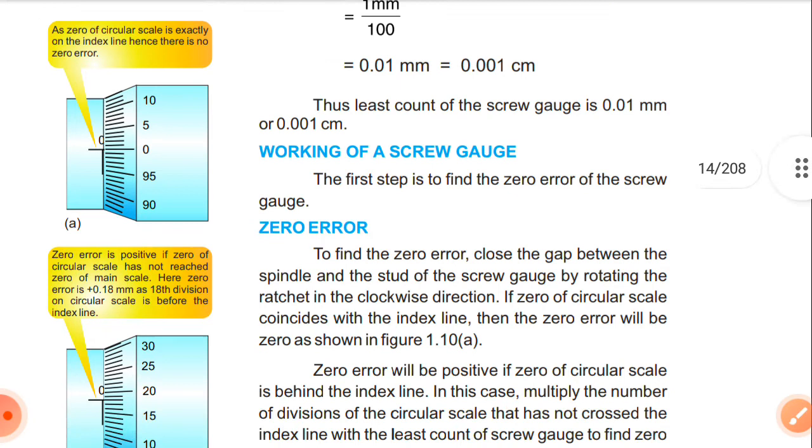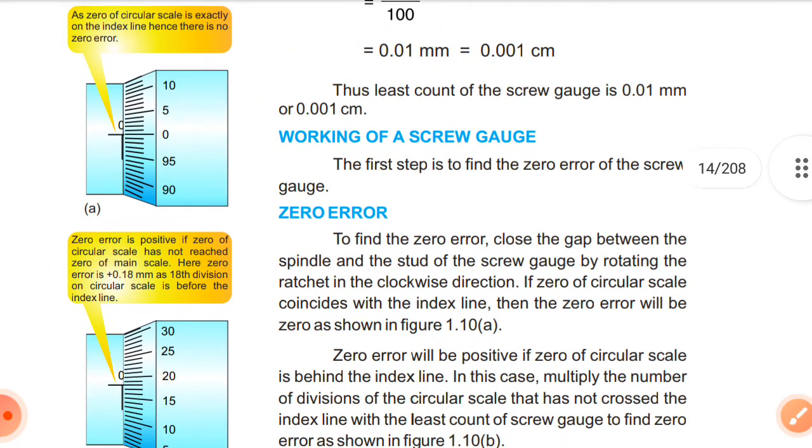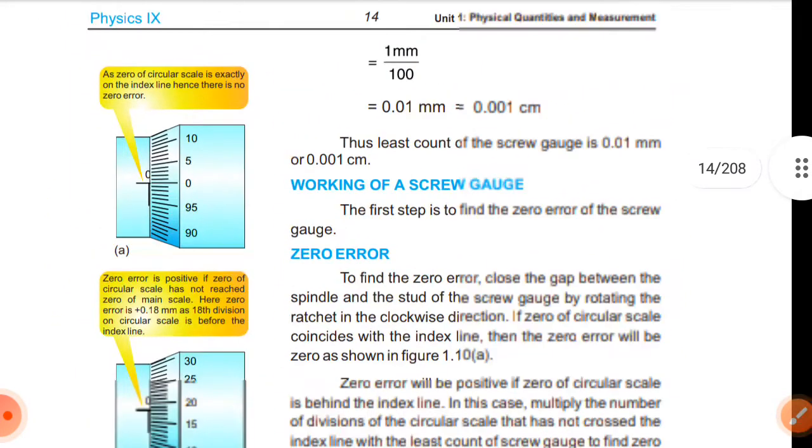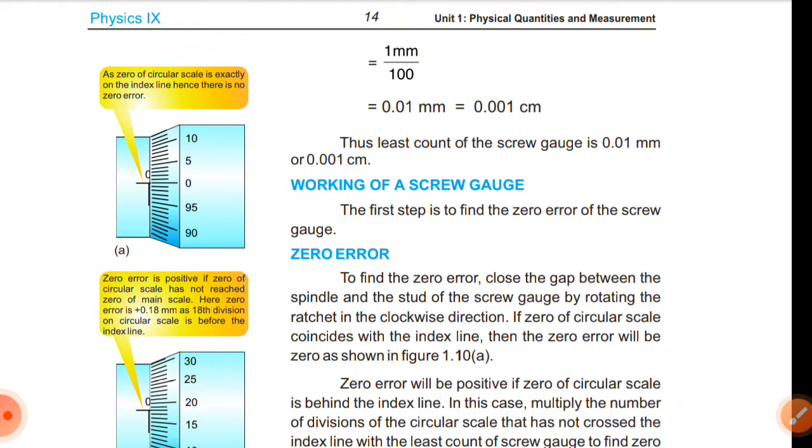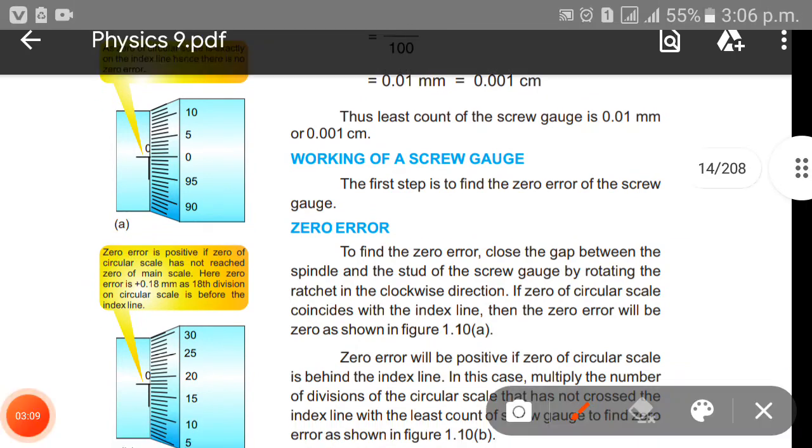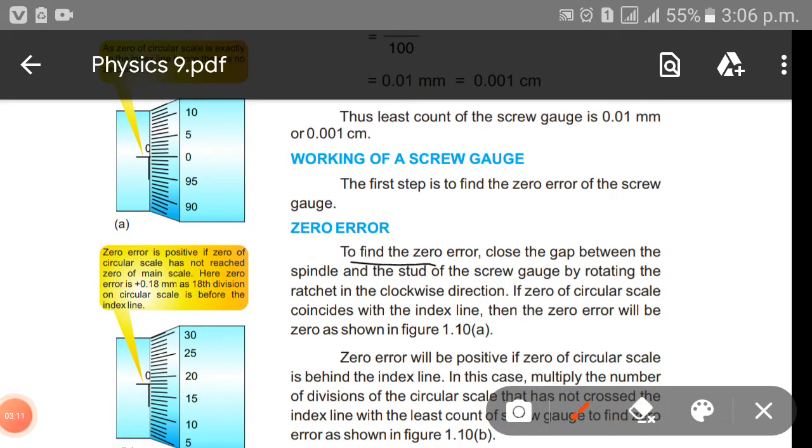So now we have to discuss about the working of screw gauge. In that way we also check zero error. The first step is to find the zero error of the screw gauge. To find the zero error, close the gap between the spindle and stud of the screw gauge by rotating the ratchet in the clockwise direction. This is important. If the zero of circular scale coincides with the index line, then the zero error will be zero, which is shown here.